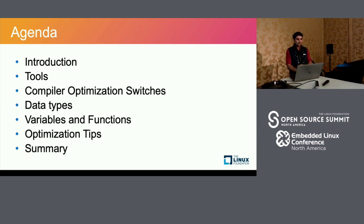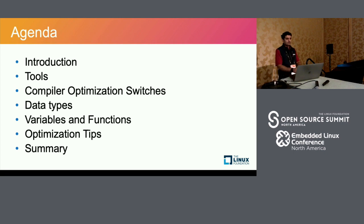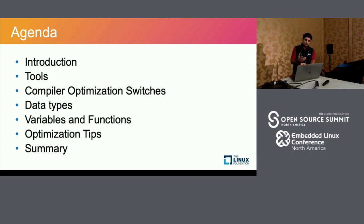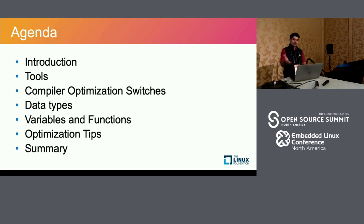The agenda covers: tools and some compiler optimization switches; data types — you can do a lot with how you arrange your data to help the compiler; variables and functions — there's a lot you can do with how you deal with variables or how you define your functions; and then a series of optimization tips. Feel free to ask questions and start discussions — if you have effective tips, share them.